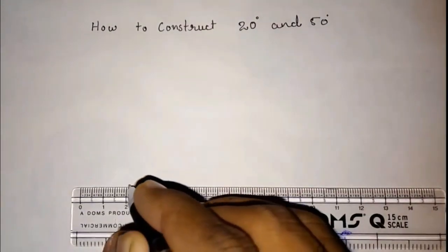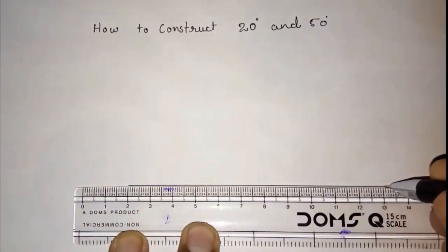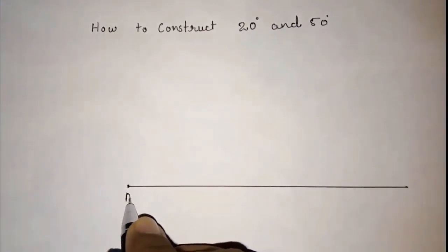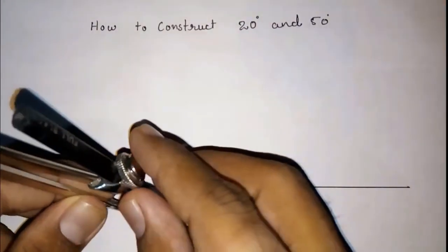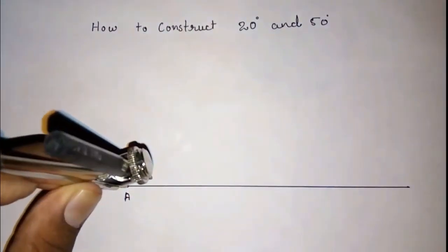If I want to draw, look at this line. If I want to draw 20 degree from this point A, what I have to do? First, with the compass, I have to construct 60 degree.